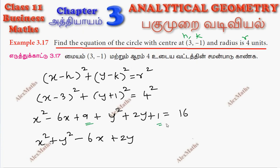So this is 9 plus 1, 10 and 16. This is minus 16 and minus 6 equal to 0.